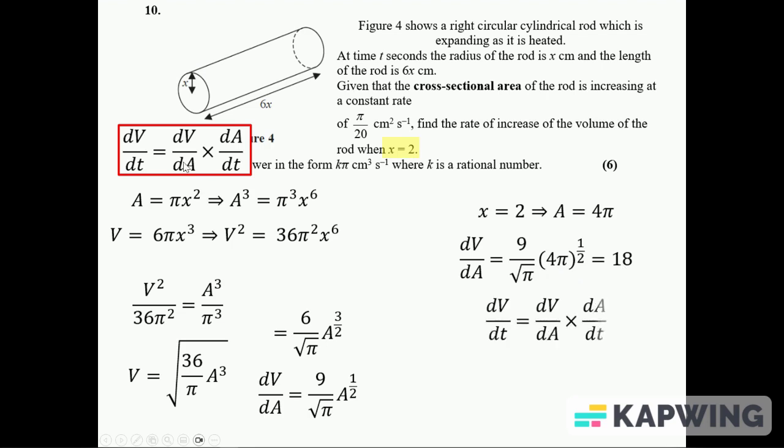So that's what's going to go in here. So dV over dt equals dV over dA, which is 18, times the dA over dt, which is π over 20. So 18 times π over 20, which is 18π over 20, which is nine-tenths π.